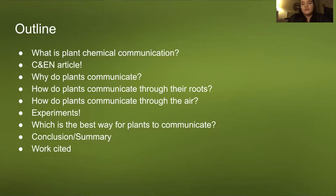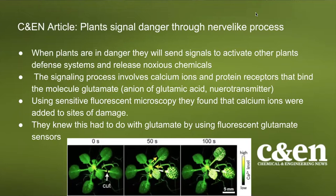First we're going to go over the CNE article. It is titled 'Plants Signal Danger Through Nerve-Like Process.' It discusses how when plants are in danger they will send signals to activate other plants' defense systems and release noxious chemicals — chemicals that are dangerous or poisonous. The signaling process involves calcium ions and protein receptors that bind the molecule glutamate, which is an anion of glutamic acid and is known to be a neurotransmitter.